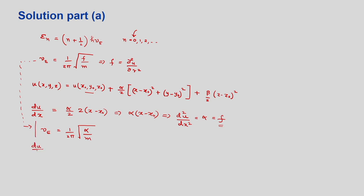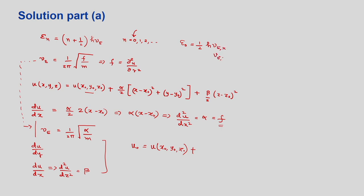You take dU/dx, dU/dy, and also dU/dz. Taking d²U/dz² will give you only beta. So if you collect all results, you will have nu_e_x, nu_e_y, and nu_e_z. Writing this out, the ground state position U₀ equals U(x₀, y₀, z₀), plus the energy contribution in the ground state. We need to write all expressions in terms of alpha and beta. In the ground state, E₀ = (1/2) h*nu_e. There are three directions: x, y, and z, giving three different terms.